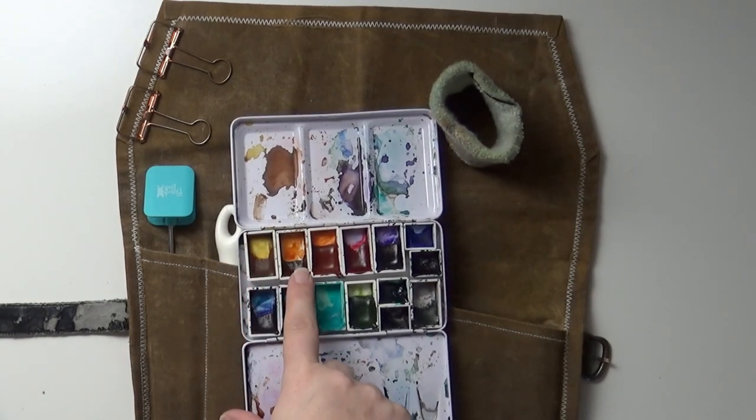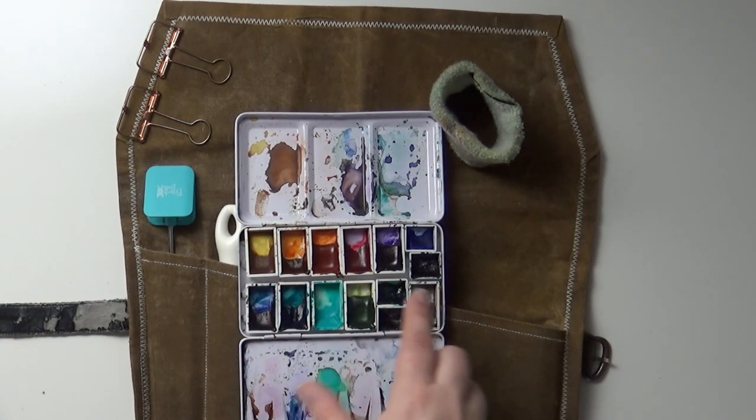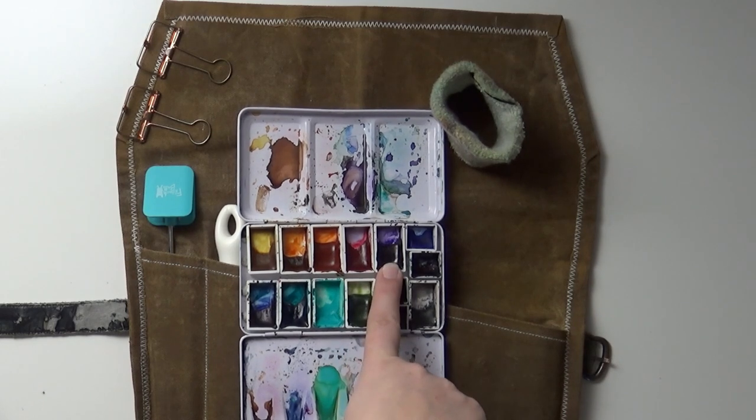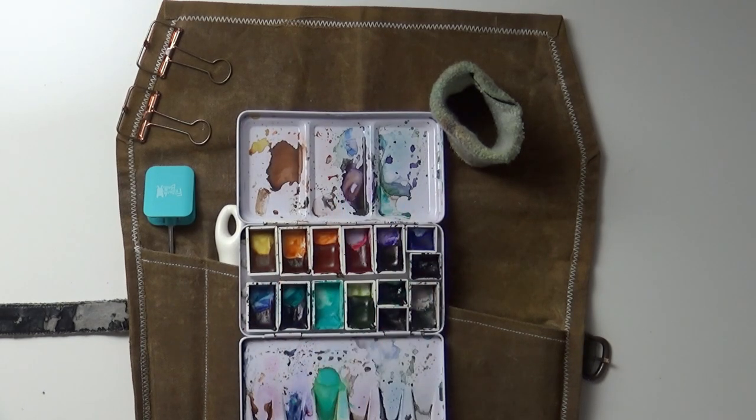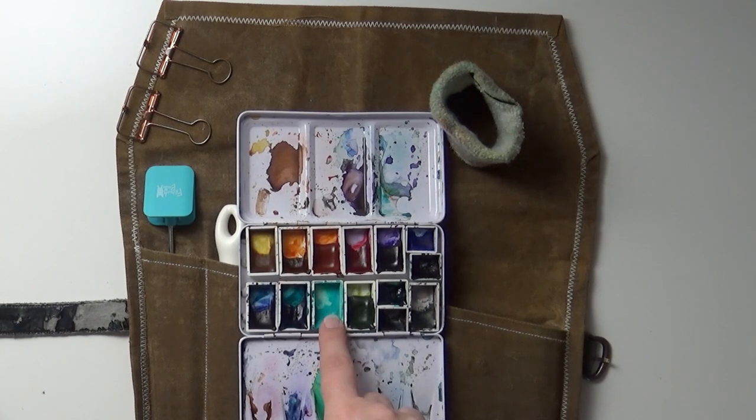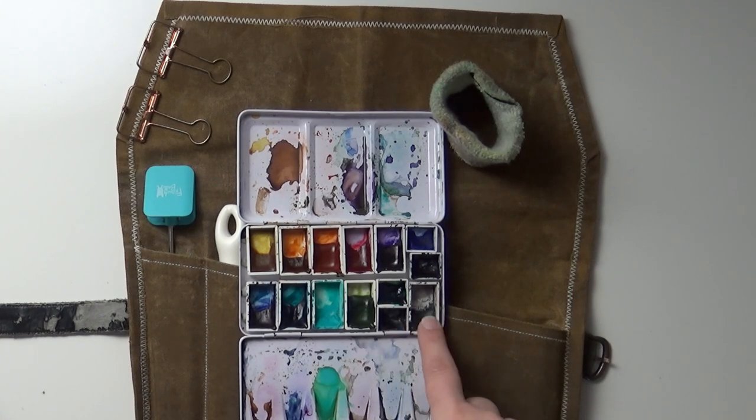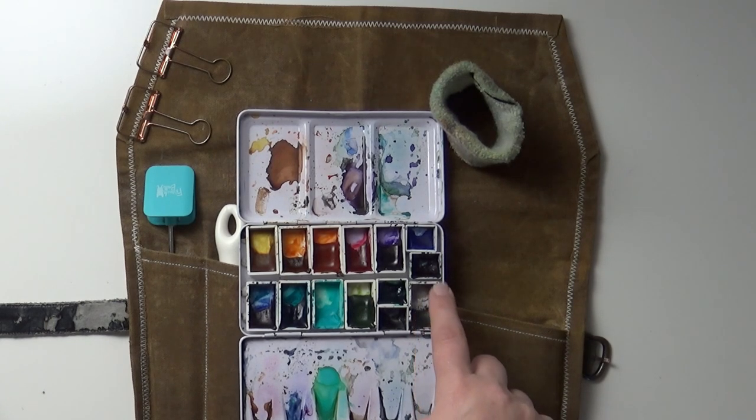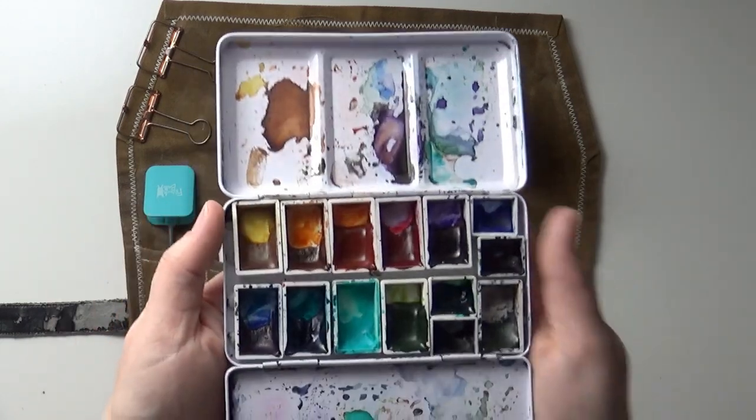I've got Winsor Newton quinacridone gold, Daniel Smith quinacridone burnt orange, Daniel Smith quinacridone sienna. Yes, I have two oranges in my palette, that's how much I love orange. Daniel Smith quinacridone rose, Daniel Smith carbazole violet, Daniel Smith ultramarine, Daniel Smith indigo, Daniel Smith anthrone blue. Yes, I have three warm blues in my palette after I said two videos ago that I was going to try to use just one warm blue. Somehow I ended up with all of these, somehow I use all of them. Daniel Smith phthalo turquoise, cobalt teal, Daniel Smith sap green, Daniel Smith phthalo green blue shade, Daniel Smith Payne's gray, and Daniel Smith shadow violet.